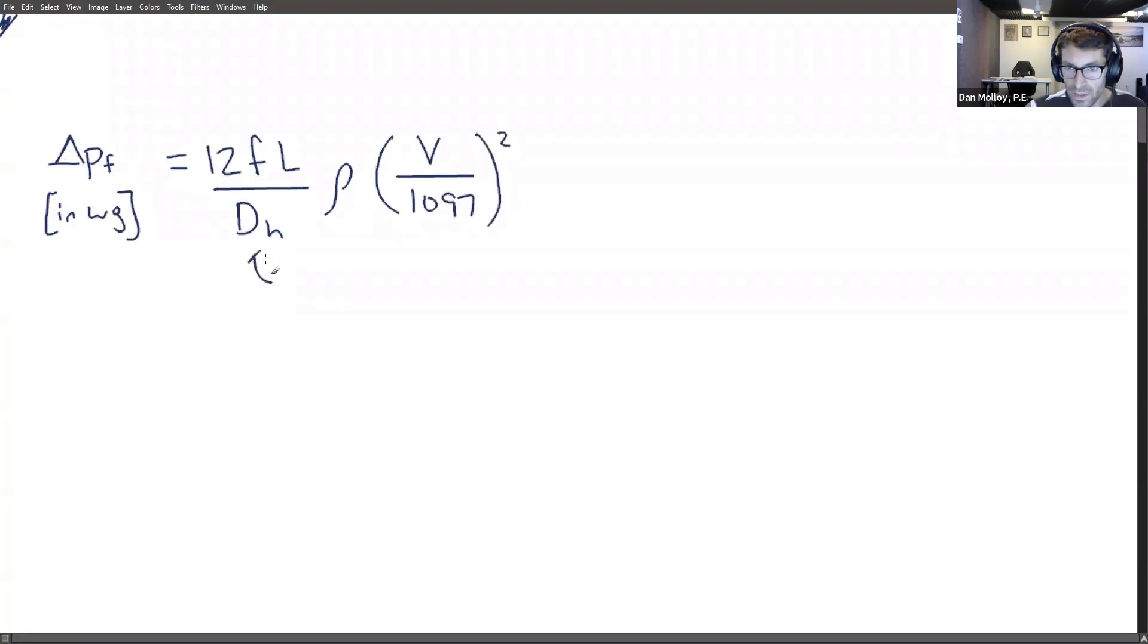And a couple of notes as we go into this: this is meant to go in in inches. This is meant to go in in feet per minute, feet per minute velocity. The density is meant to go in in pounds per cubic foot. And the friction factor is unitless and the length is meant to go in in feet.